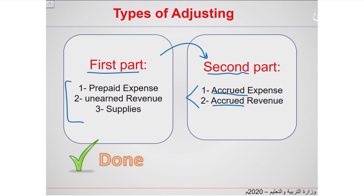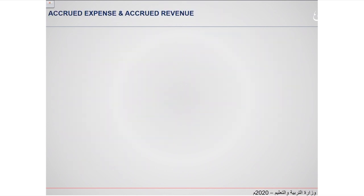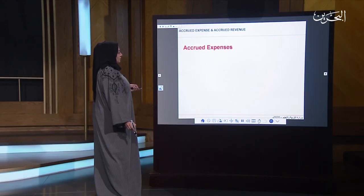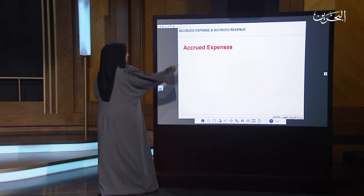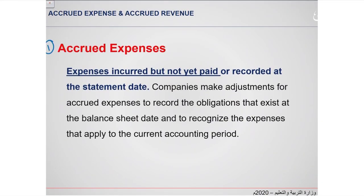Let's start with the first type. Number one: accrued expense. What do you mean by accrued expense? It is an expense that has accrued but not paid or recorded at the statement dates.